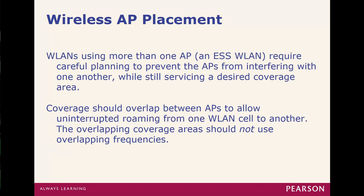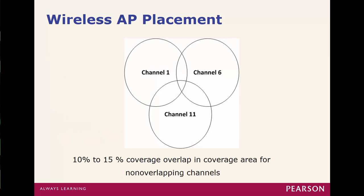When deploying an ESS wireless LAN using more than one access point, a big part of the process is planning for convergence and coverage. Access points should converge with one another so their coverage extends all the way through the building, with some overlap between channels. That way, if a user is walking through the building and connects to one access point's Wi-Fi, they should stay on the same network all the way through — other access points will recognize them and pick them up without requiring a reconnect.